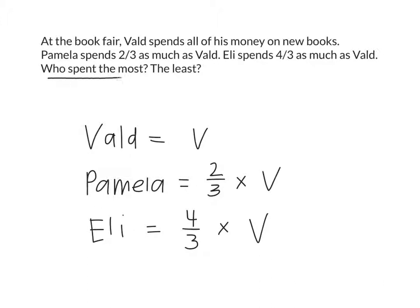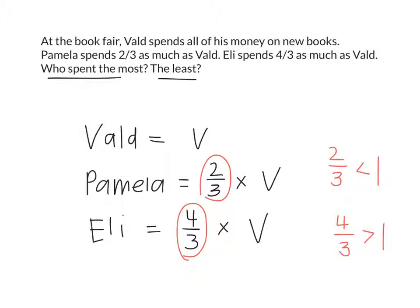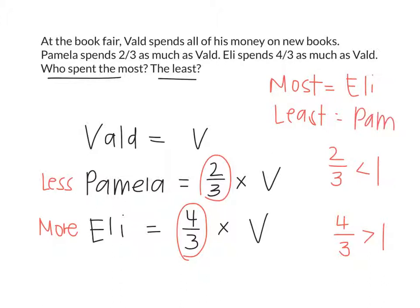This question asks who spent the most and least money. Vald spent all his money — we'll call that V. Pamela spent two-thirds as much as Vald, so that's two-thirds times V. Eli spent four-thirds as much as V. Pamela's scaling factor of two-thirds is less than 1, so she spent less than Vald. Eli's scaling factor of four-thirds is greater than 1, so he spent more than Vald. Eli spent the most and Pamela spent the least. This is how you use knowledge of scaling factors to solve word problems.